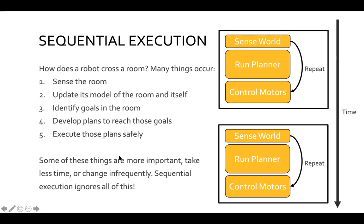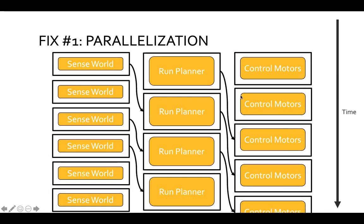At the same time, some of these things change different amounts — they change with varying frequencies in time. Sequential execution really just ignores all of these different aspects. To break apart what these different problems are, the first thing we might want to do is parallelize our code. We could do this over multiple machines, or in many cases just using multiple cores on the same machine.